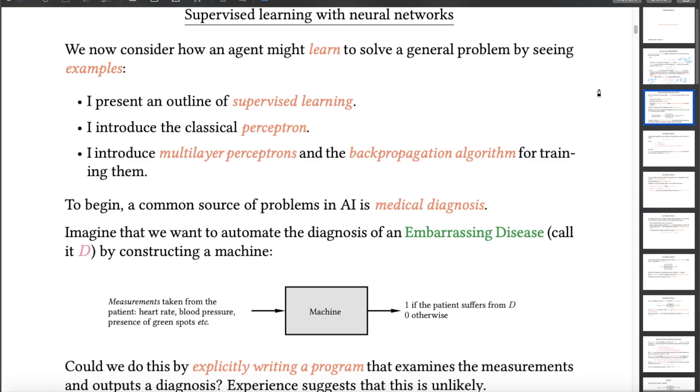And I'm going to start by just setting up the kinds of problems that we're interested in, and I'm going to use medical diagnosis because it's a common source of problems in AI and it's one where neural networks have had quite a lot of success. So imagine we want to automate the diagnosis of an embarrassing disease, which I shall call D. And I want to do that by designing a machine that takes some measurements that you get from the patient and outputs 1 if the patient suffers from D and 0 otherwise. Now this can be measurements like heart rate, blood pressure, and so on. Or you can take the idea of a measurement to the extreme and just give the machine the pixel values for an x-ray.